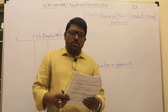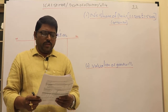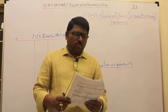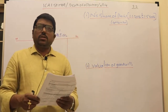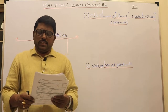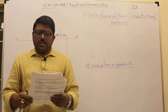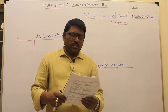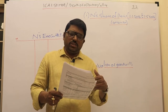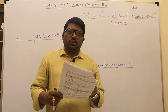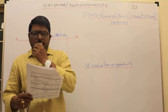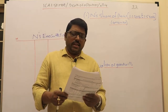On the event of death of a partner, his executors will be entitled to the following items: first, the capital to his credit at the time of death — whatever the capital balance he is having should be transferred to his executors. Second, his proportion of profit up to the date of death, based on the average profits of the last 3 completed years.